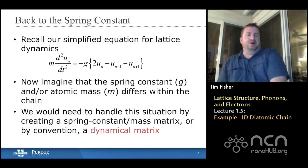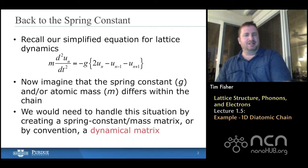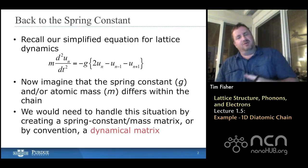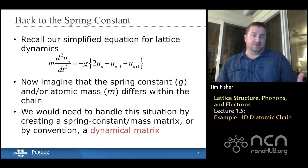So if we go back to our simple equation for lattice dynamics, this was for a one-dimensional atomic chain where every atom was the same, every spring constant was the same. It had a spring constant of g. Now we need to imagine, well, maybe the masses differ or the spring constant differs, and how would we handle that?